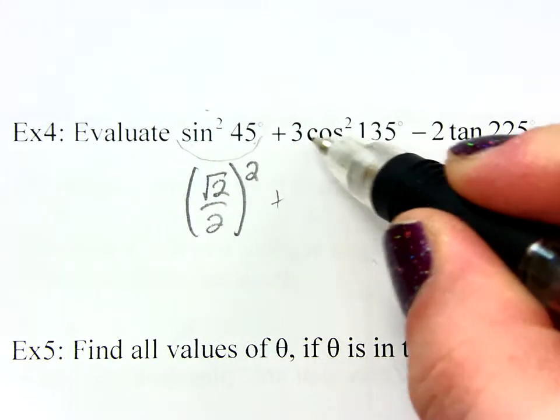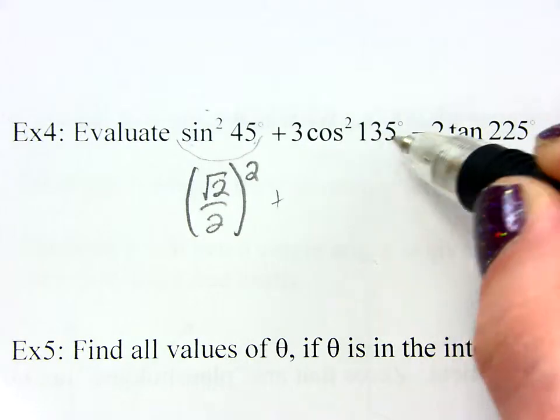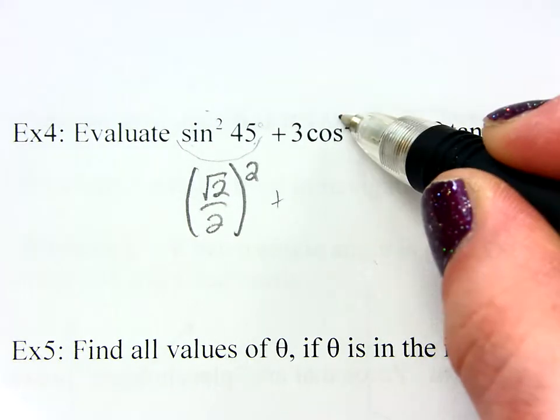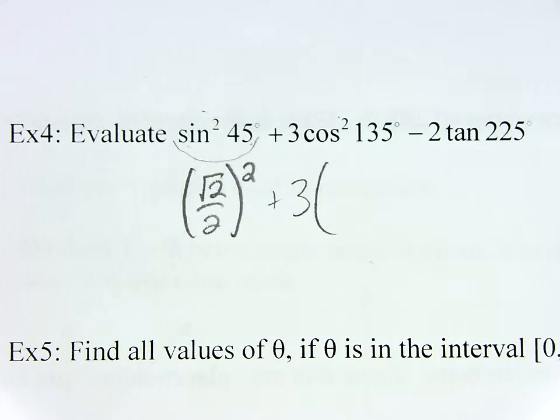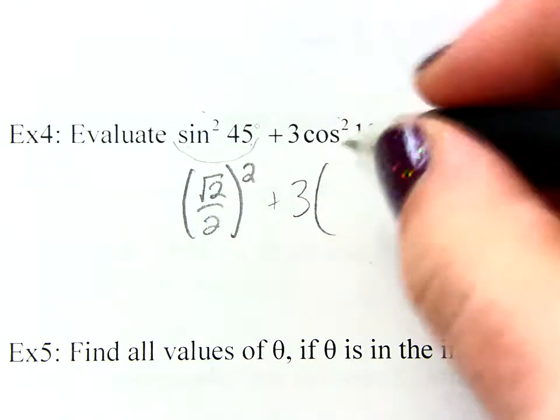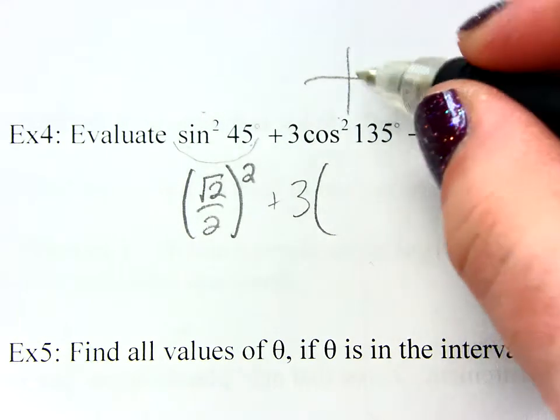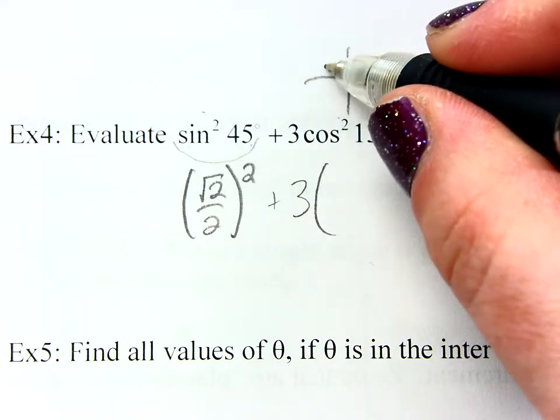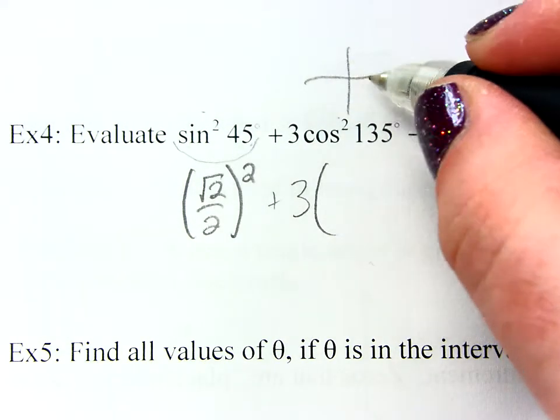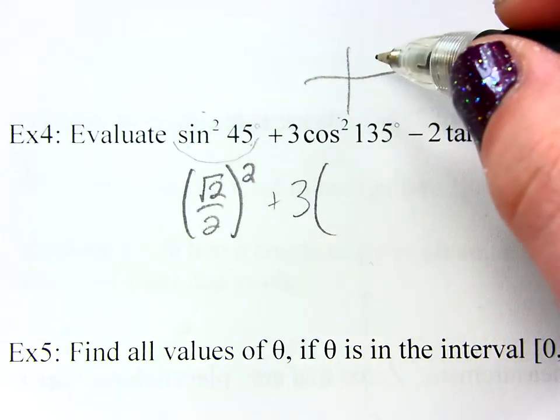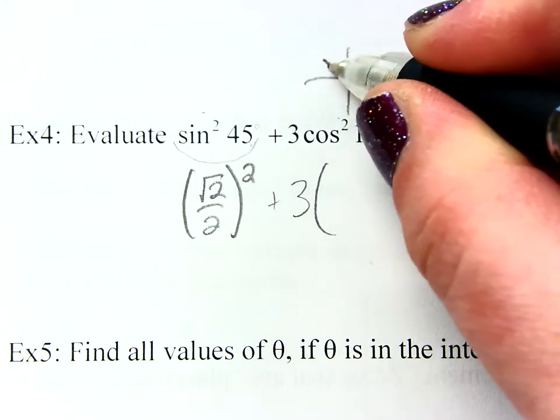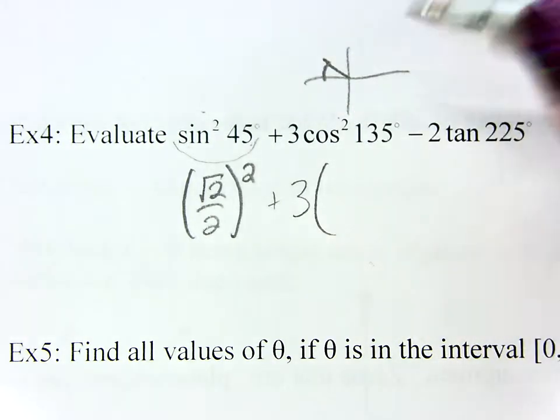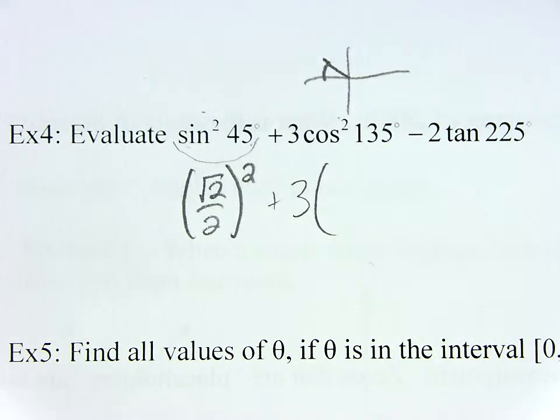Now, this is just 3 times the cosine of 135 squared. So 3 times cosine of 135. I've got to find its reference angle. Well, 135 you're going to end up over here. So I need to do 180 minus 135. So that is 45.